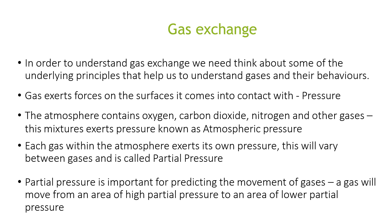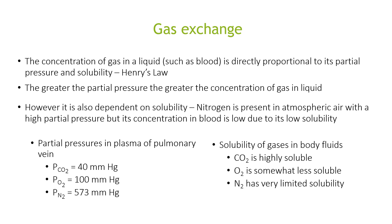To understand gas exchange, we need some underlying principles about gas behaviour. Gas exerts forces on the surfaces it contacts, known as pressure. The atmosphere contains oxygen, carbon dioxide, nitrogen, and other gases, exerting a pressure known as atmospheric pressure. Each gas exerts its own pressure, called partial pressure, which varies between gases. A gas moves from an area of high partial pressure to an area of low partial pressure. The concentration of a gas in a liquid such as blood is directly proportional to its partial pressure and solubility — this is Henry's Law. The greater the partial pressure, the greater the concentration of gas in a liquid; however, this is also dependent on solubility. Nitrogen is present in atmospheric air at high partial pressure, but its concentration in blood is low due to its low solubility.